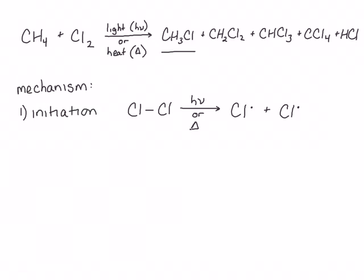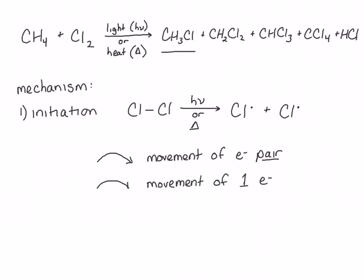We've looked at mechanisms in the past. Remember that a double-headed arrow is used to show the movement of an electron pair. But in this case, the bond breaks homolytically, meaning that one electron from this bond goes to one chlorine atom and the other electron from the bond goes to the other. We indicate the movement of a single electron with a single-headed arrow. So to show this bond breaking, we draw a single-headed arrow from the bond to the chlorine on the right, and we show the movement of the other electron to the chlorine on the left — one electron ending up on each chlorine, which is where the single unpaired electron in each of the chlorine radicals comes from.